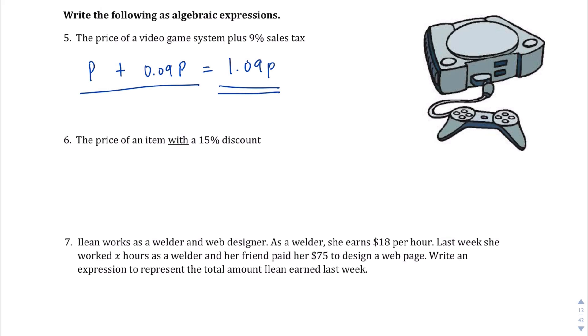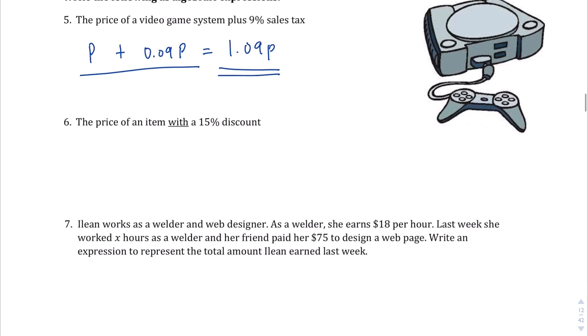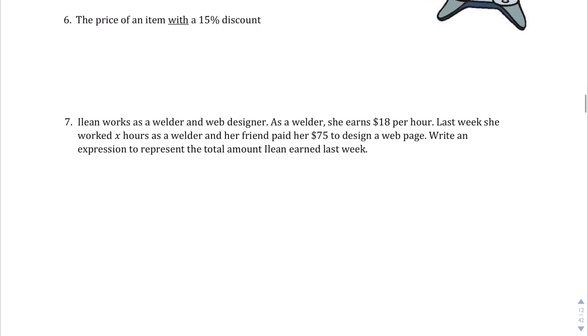Okay, so for question number 6, we are asked to write the expression for the price of an item with a 15% discount. So we're taking something away. Here's the price of the original item, and we're going to take away a 15% discount on that original price, P. So go ahead and punch that into the calculator. 1 minus 0.15, you should get 0.85P to be the expression that gives that 15% discount.